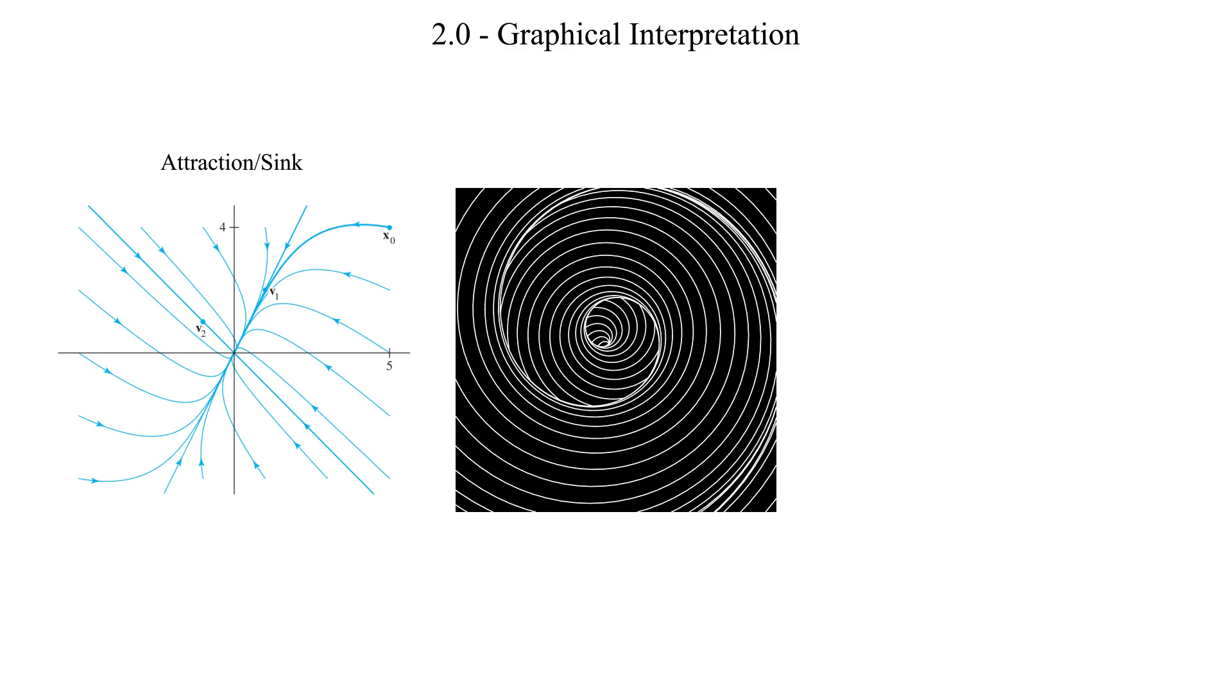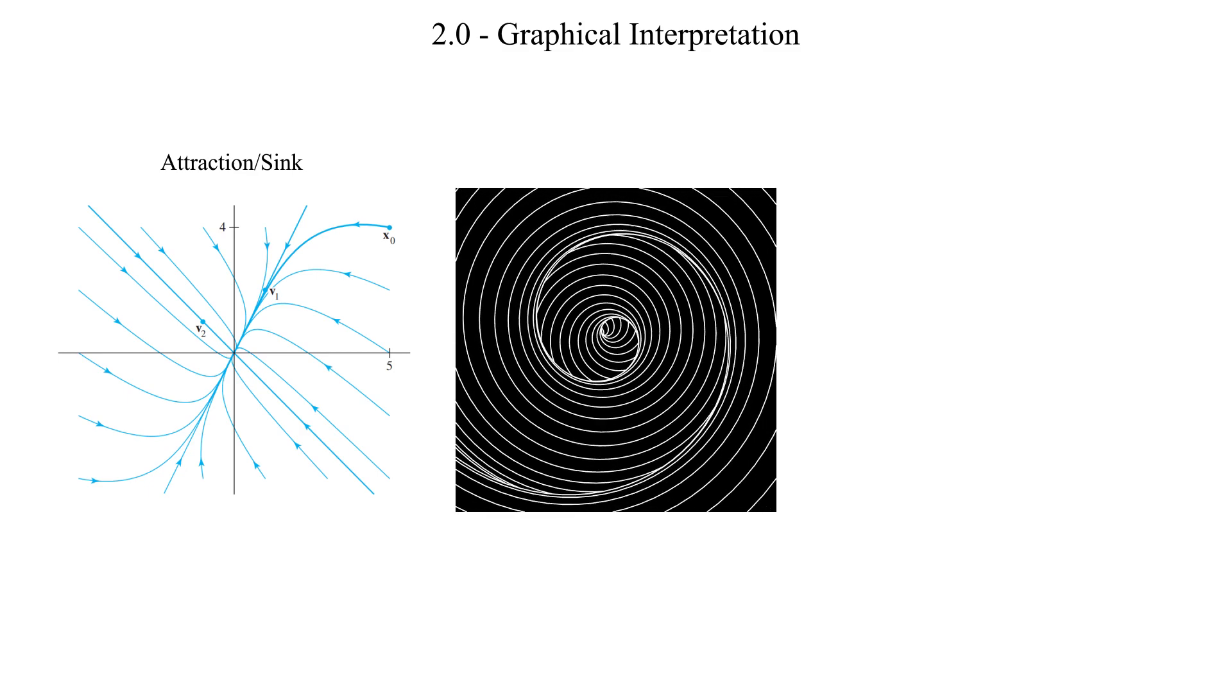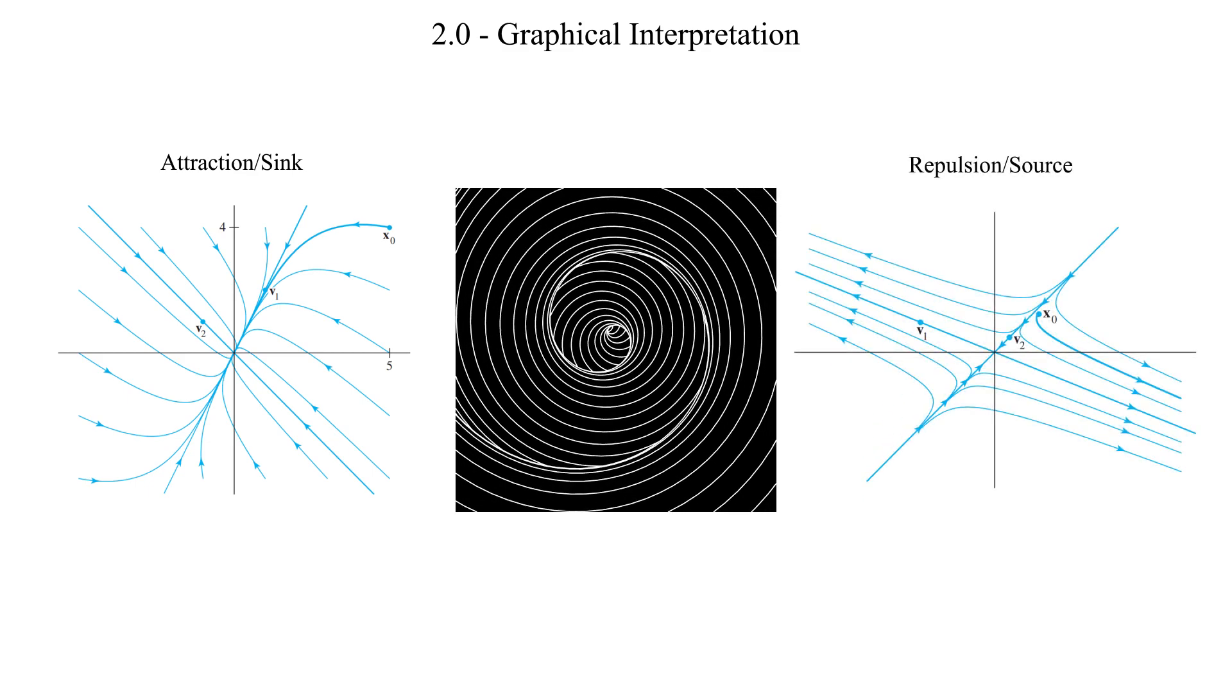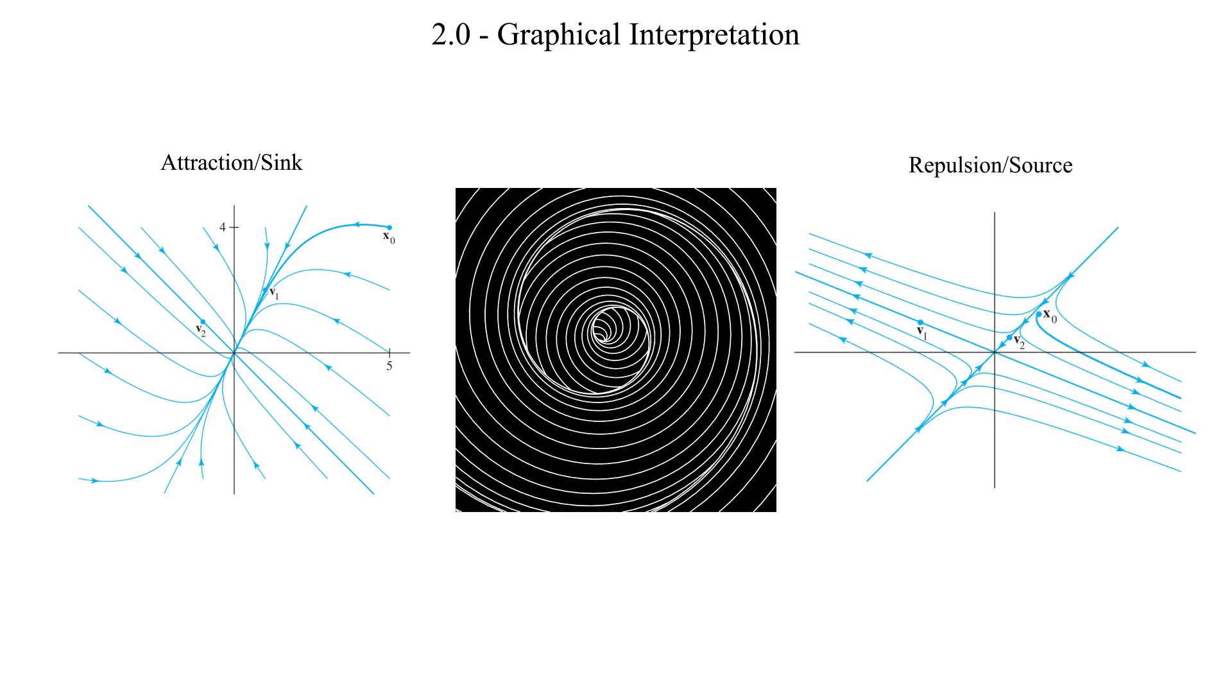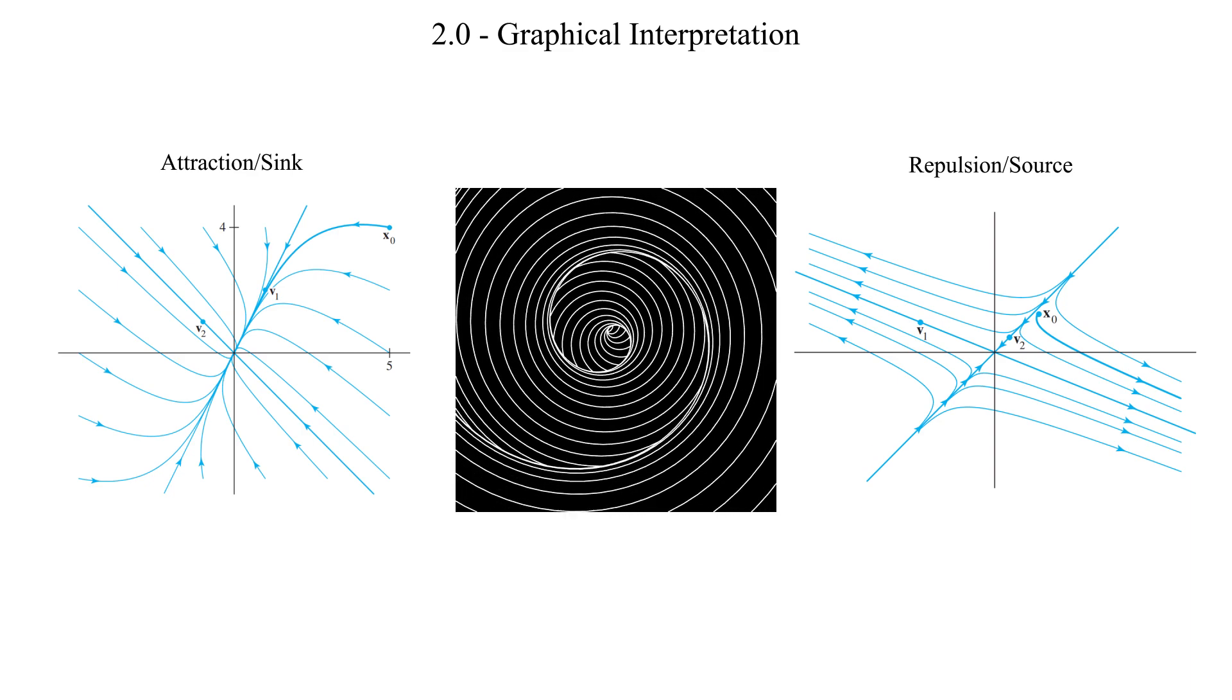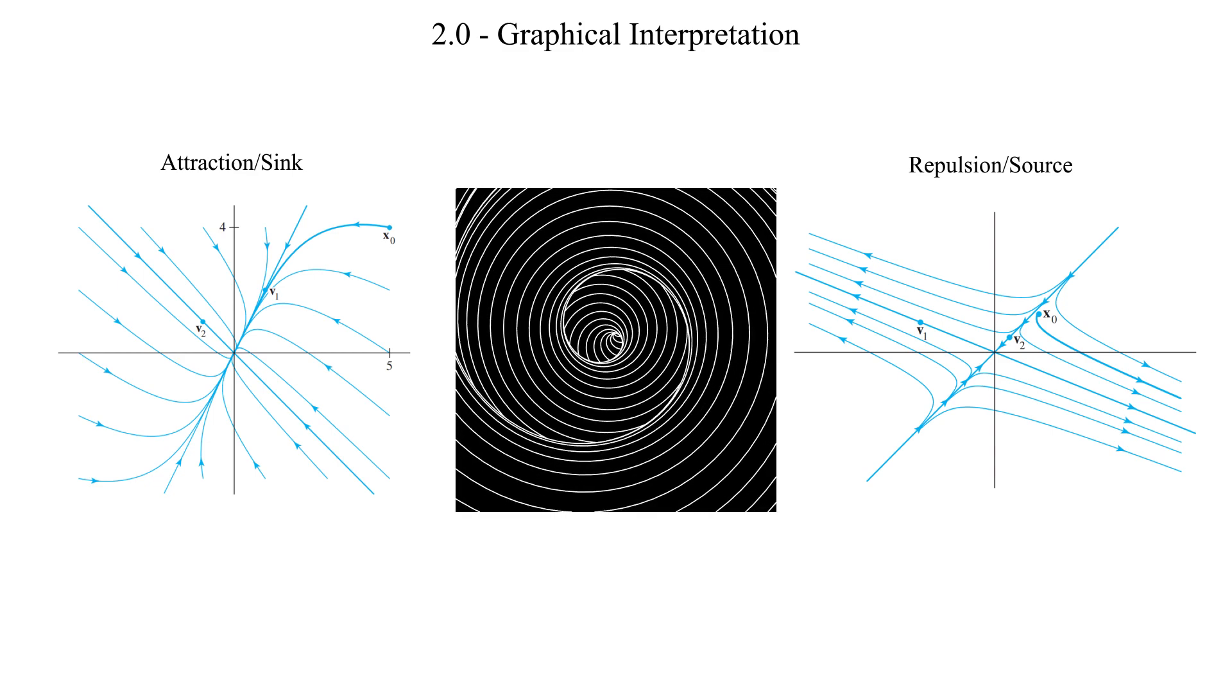However, if the eigenvalues in the previous circuits example were positive rather than negative, then the corresponding trajectories would be pointing away from the origin, meaning that the origin would be considered a repeller or source of the dynamical system. Furthermore, the direction of the greatest repulsion would be the line containing the trajectory of the eigenfunction corresponding to the positive eigenvalue with the largest magnitude.